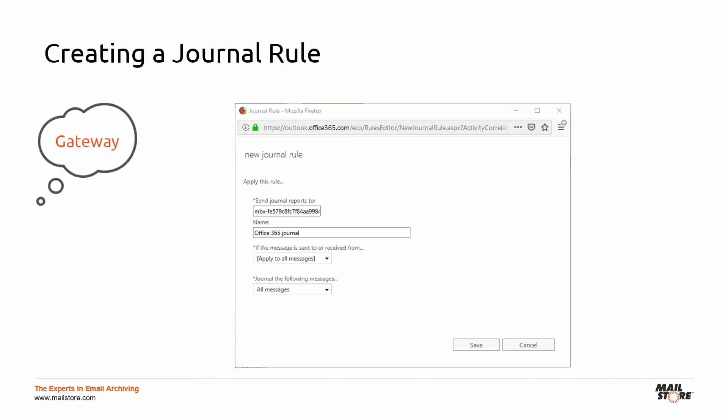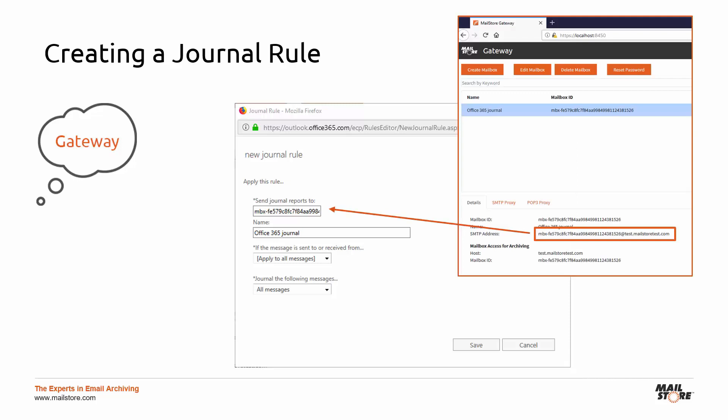First, in the administrative area of Microsoft Office 365, you need to create a journal rule to produce the copies for the journal mailbox. When you create the journal rule in Microsoft Office 365, you must enter the recipient mailbox as follows. Once you've created and stored your journal rule, the rule will be active and, from now on, it will copy all inbound and outbound emails from mailboxes in this Microsoft Office 365 environment to the journal mailbox.